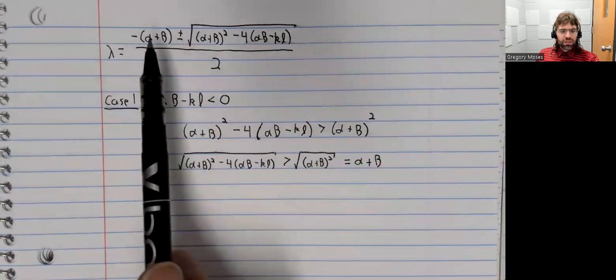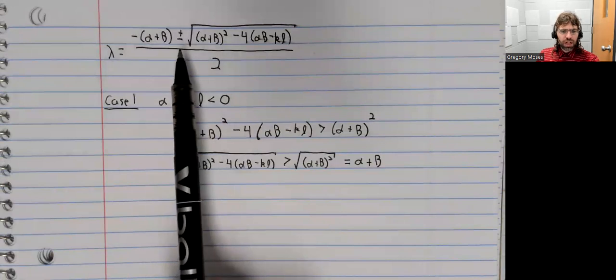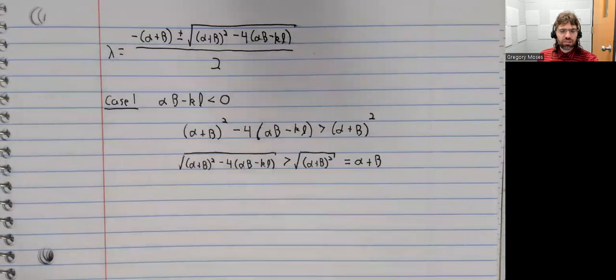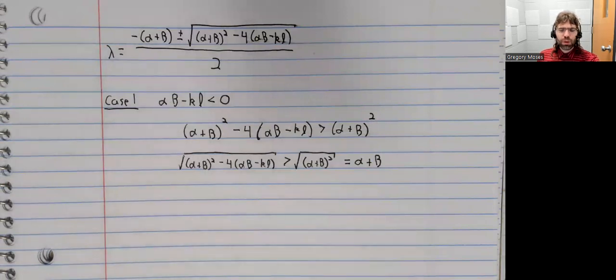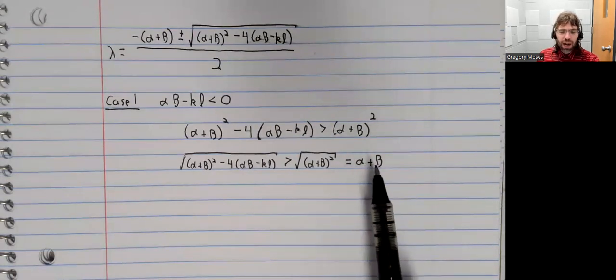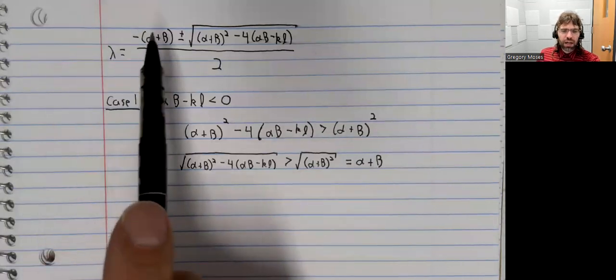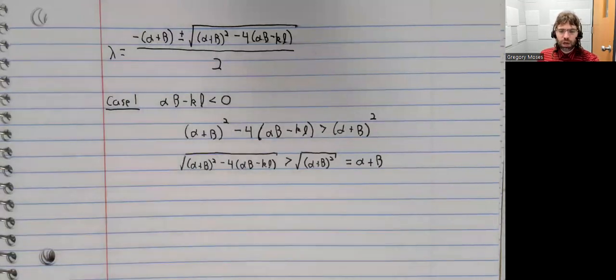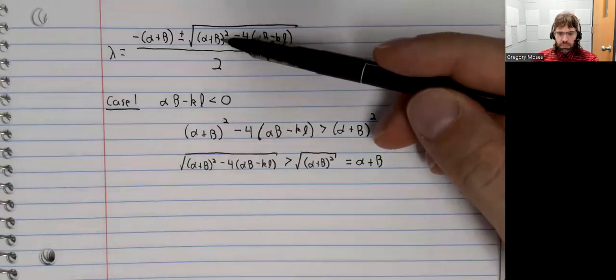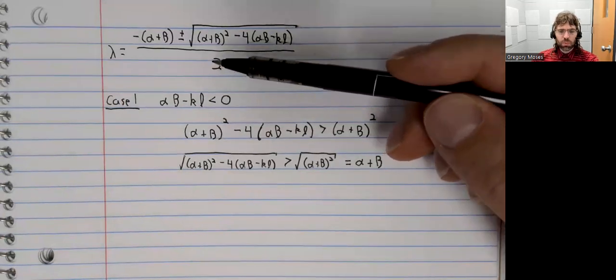And now if we have negative alpha plus beta plus a number greater than alpha plus beta, that's positive. Like if alpha plus beta were five and this were seven, negative five plus seven is positive. And a positive number divided by two is still positive.